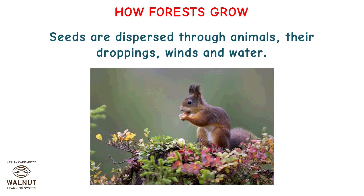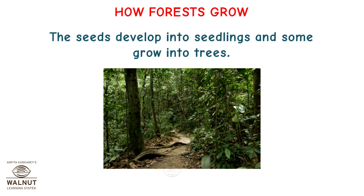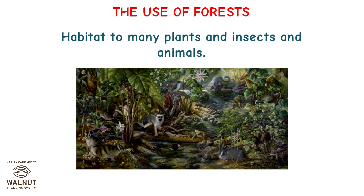How forests grow: seeds are dispersed through animals, their droppings, winds, and water. The floor is fertile with humus and provides the right conditions for seeds to grow. The seeds develop into seedlings and some grow into trees. That's how more trees grow in the forest and the forest is maintained.